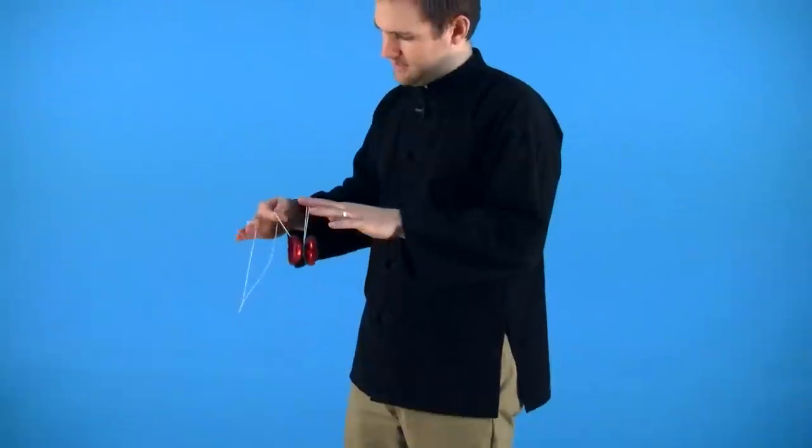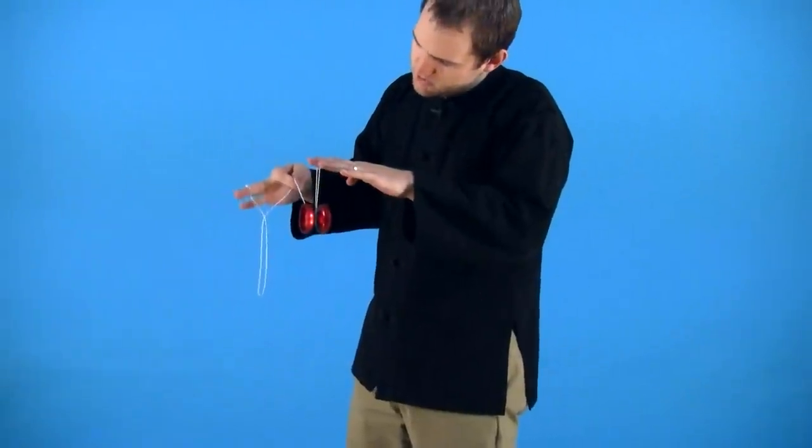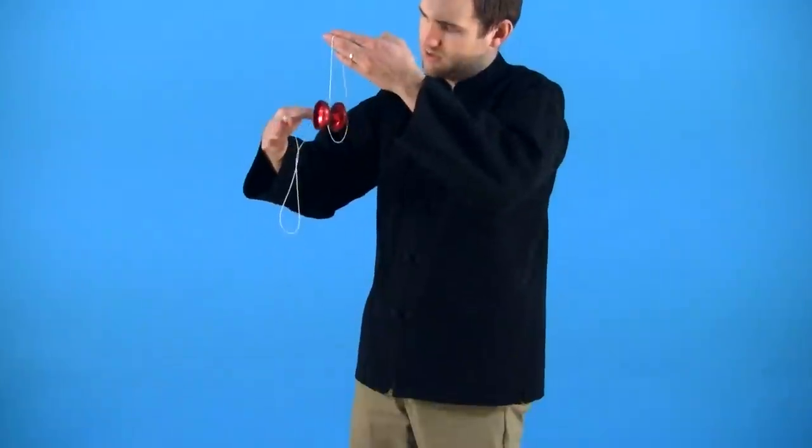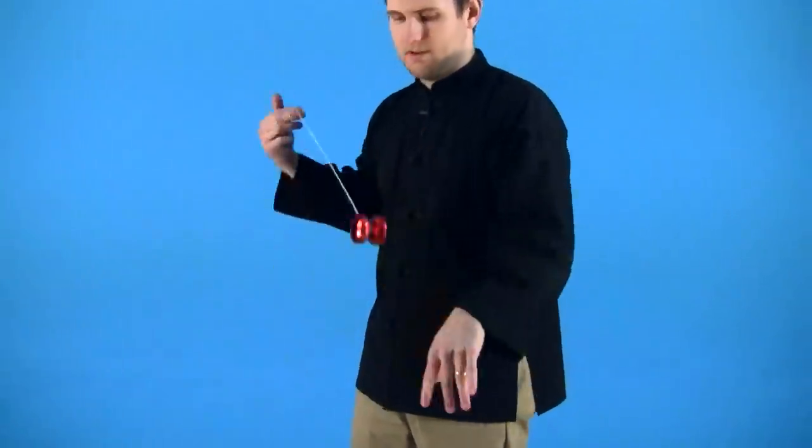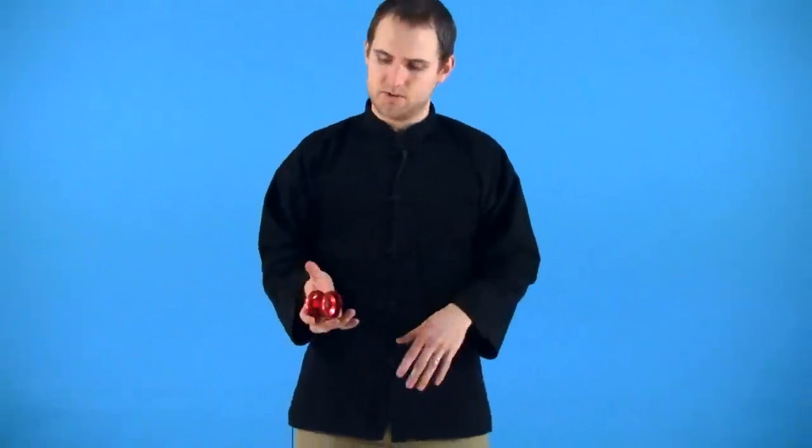The other thing is if you happen to have some twists in the string like that, you'll notice that you can still do the trick as long as you're aiming high towards your fingers. So if you aim that part of the trick up close to your throw hand, you'll be able to still hit the string even with twists in it.